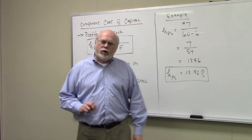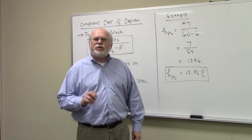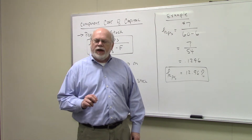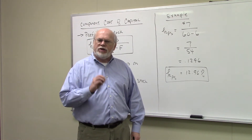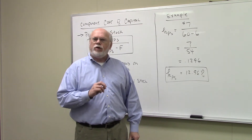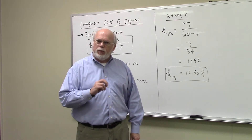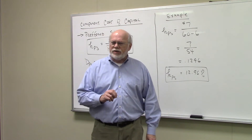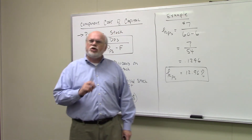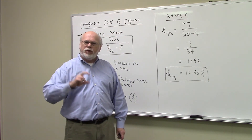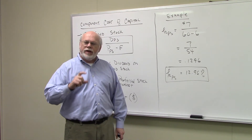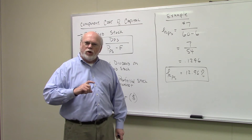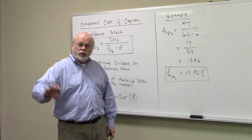The next component cost of capital we're going to talk about is preferred stock financing. People buy preferred stock because they're interested in the dividend. Preferred stock dividends are assumed to be a constant dividend in the future — that is, it's a perpetuity. Once we define it, that's indeed the dividend that the preferred stockholder will get forever into the future.